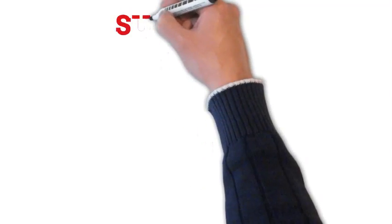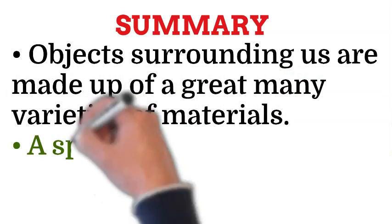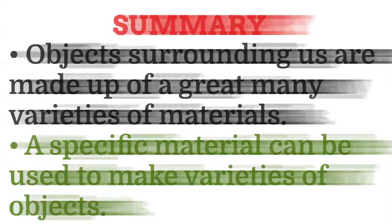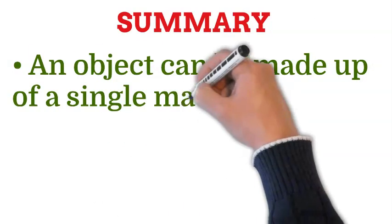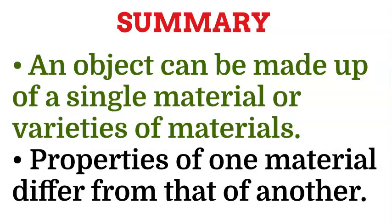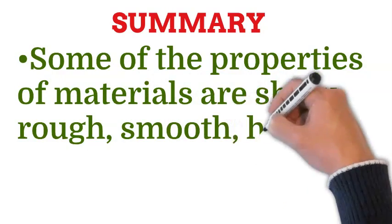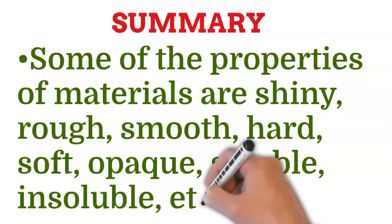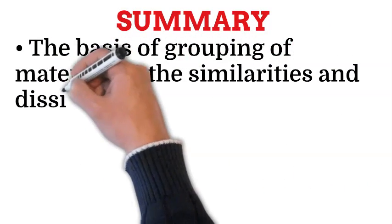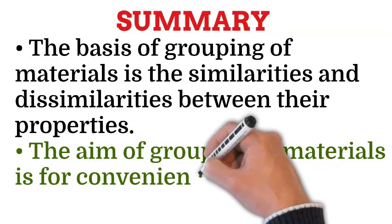Now let's discuss the summary of this topic. Objects surrounding us are made up of a great many varieties of materials. A specific material can be used to make varieties of objects. An object can be made up of a single material or varieties of materials. Properties of one material differ from that of another. Some of the properties of materials are shiny, rough, smooth, hard, soft, opaque, soluble, insoluble, etc. The basis of grouping of materials is the similarities and dissimilarities between their properties. The aim of grouping of materials is for convenience and to study their properties.